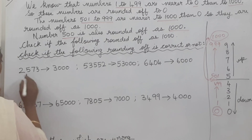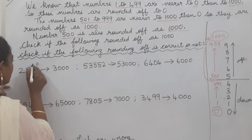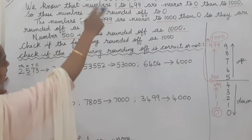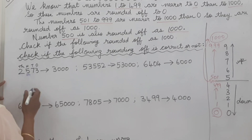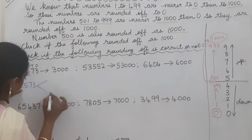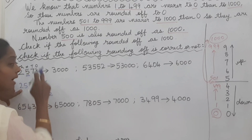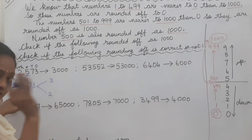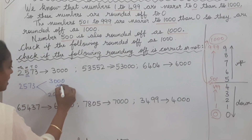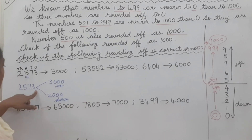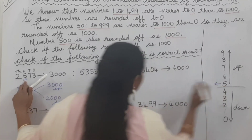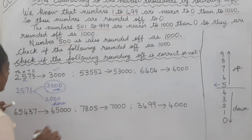Let's check whether the following rounding off is correct. First: 2,573 is rounded off to 3,000. Write the place values - ones, tens, hundreds, thousands. We look at the hundreds digit. Write 2,573 and put two arrows. The thousands digit stays same going down, and plus one going up - that is 2,000 below and 3,000 above, with three zeros. The hundreds digit is 5, which is in the upper range, so the answer 3,000 is correct.